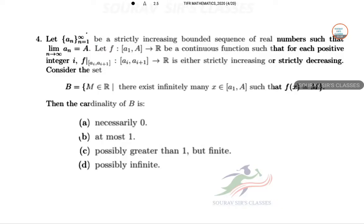Let an equal to n equal to 1 to infinity. We are strictly increasing bounded sequence of real numbers such that limit n tends to infinity an equal to f or f of an 1 to a. So this continuous function such that each positive integer i will follow this. And there exists another set B.